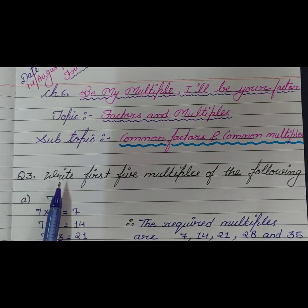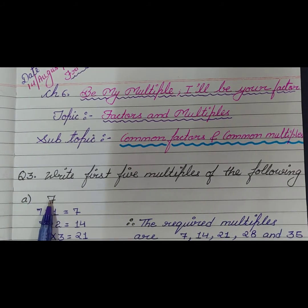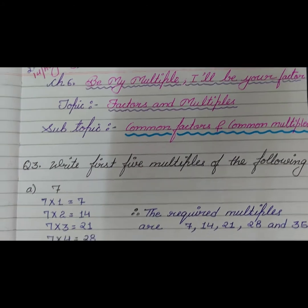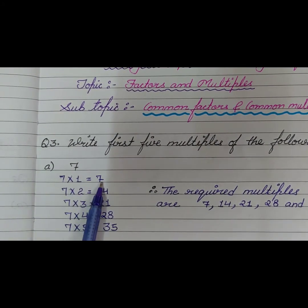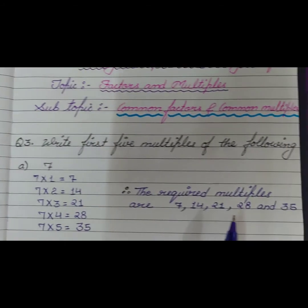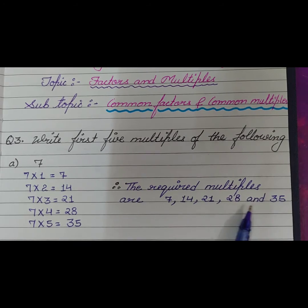Question number 3: Write the first 5 multiples of the following. Part A: 7. In this question we have to find the first 5 multiples of 7, so read the table of 7 five times. 7×1=7, 7×2=14, 7×3=21, 7×4=28, 7×5=35. Therefore the required multiples are 7, 14, 21, 28, and 35.